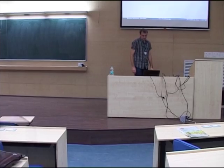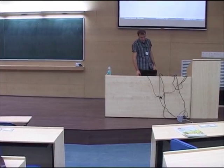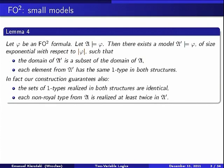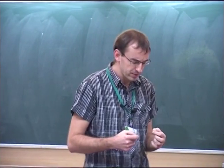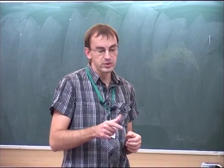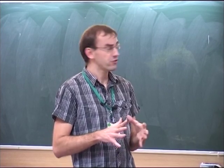Let me first recall some of the things we saw yesterday. The first result I presented was the small model property for the two-variable fragment of first-order logic. In our construction, we started from an arbitrary model of a formula phi and constructed a new model whose domain was a subset of the domain of the original model.